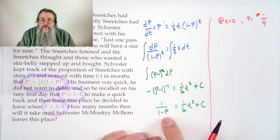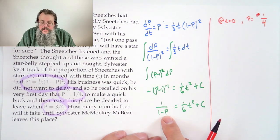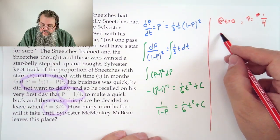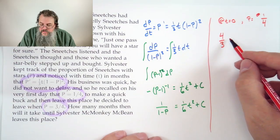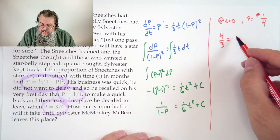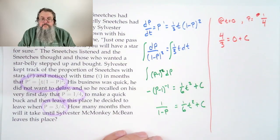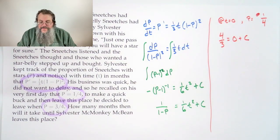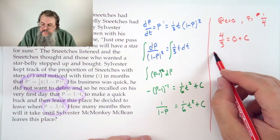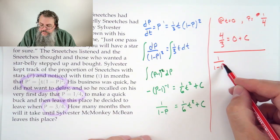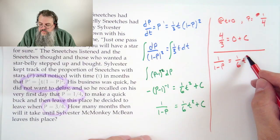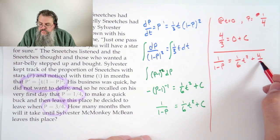So plug it in. 1 minus 1/4 is what? Well, that's 3/4. Flip it, you get 4/3 equals 1/6 times 0 squared plus C. Done. Great. So now we know C. So 1 over (1 minus P) is equal to 1/6 T squared plus 4/3.